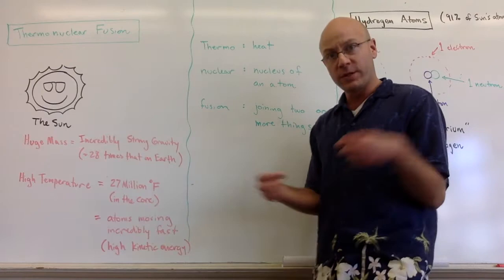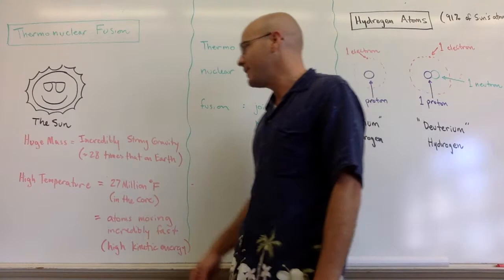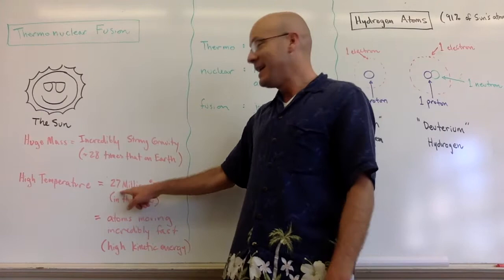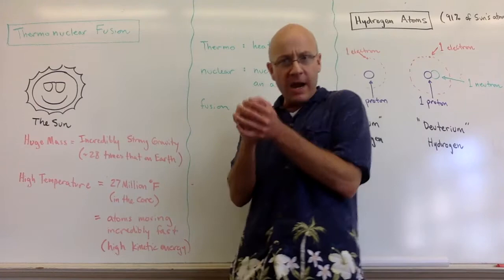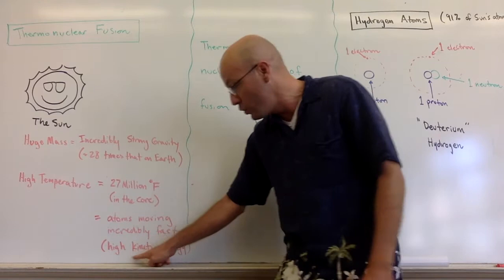As a matter of fact, it's about 28 times the gravity that there's here on earth. The sun also has an extremely high temperature. It's 27 million degrees Fahrenheit in the core, which is the very center of the sun. That means that the atoms in the center of the sun are moving at an incredibly fast speed.